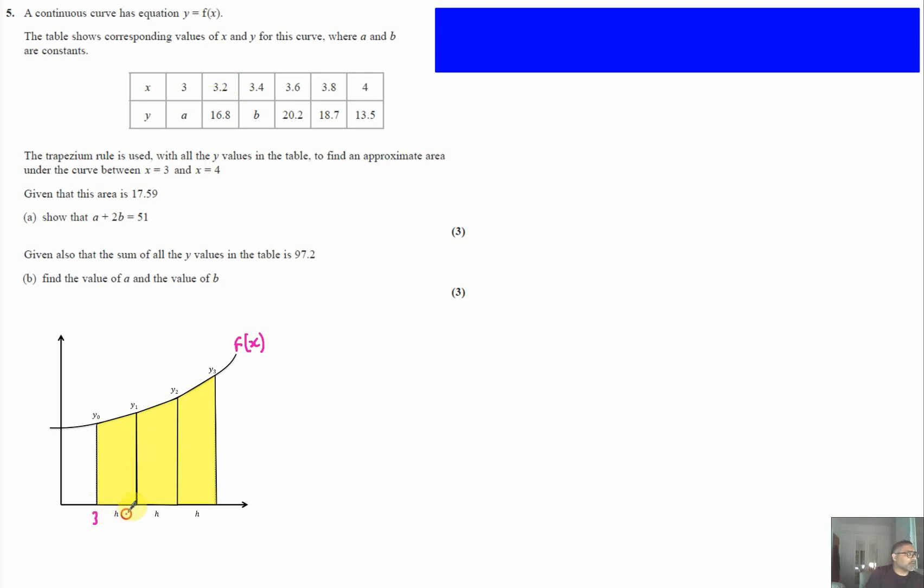Looking at the table, the x values go from 3 to 3.2 to 3.4 and so on. The height of each trapezium is 0.2, so h equals 0.2, which is important to write down first.